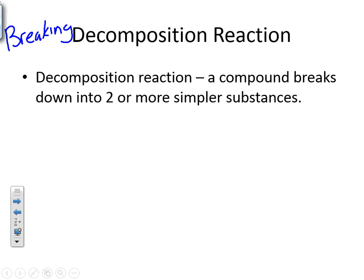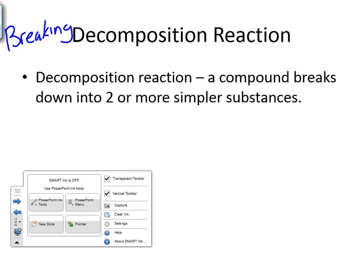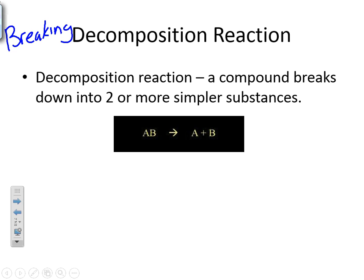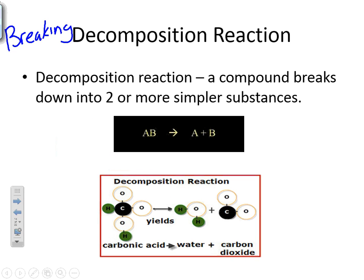So, what we're going to do is we're taking a single compound and breaking it down into two or more items. So, what's that going to look like? Now, we're going to have our AB and we're breaking it apart into A plus B. If you take a look here, I have carbonic acid. I have a C, three O's, and two H's. And what I'm going to do is break that into two things, water and carbon dioxide.